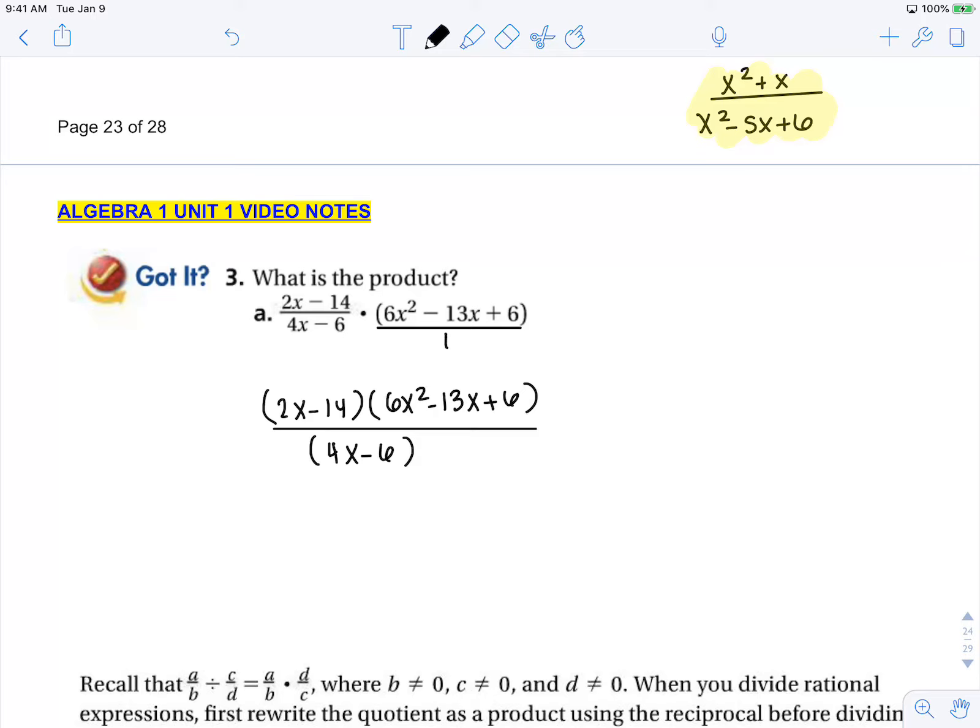My first factor, 2x minus 14, has a GCF of 2, and that leaves x minus 7.